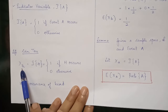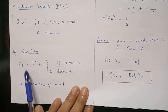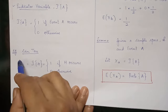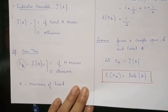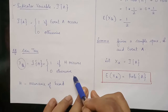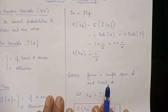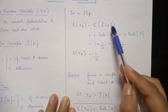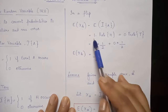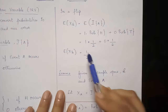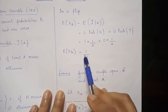Here, Xh represents the indicator random variable for a head occurring while tossing a coin. Xh equals 1 if a head occurs and 0 otherwise. The expectation of Xh equals 1 times the probability of heads plus 0 times the probability of tails, which gives us E[Xh] = 1/2.